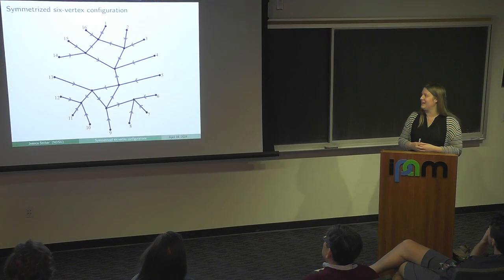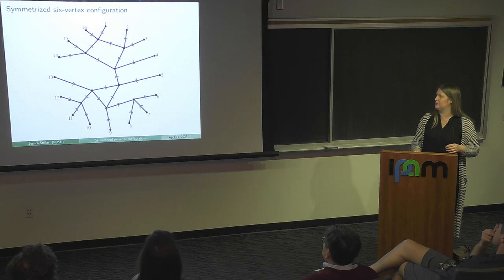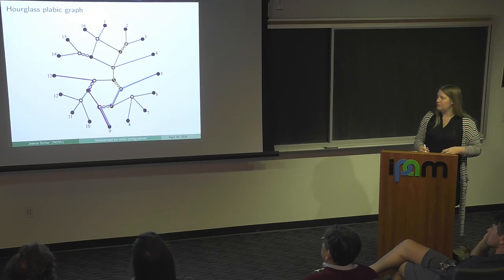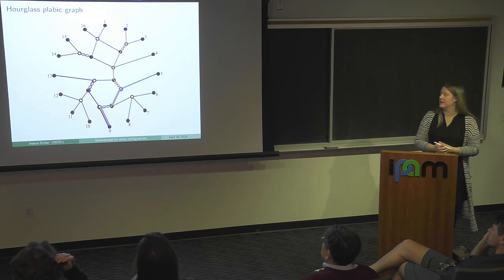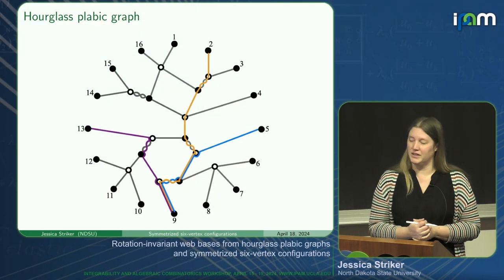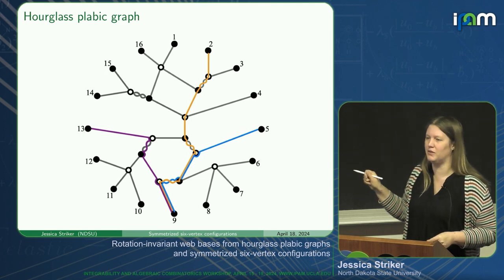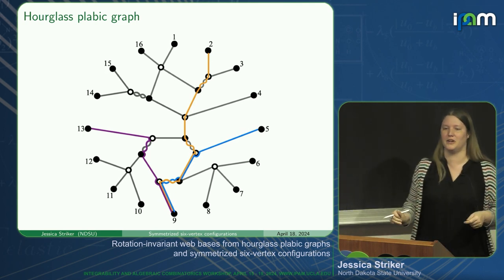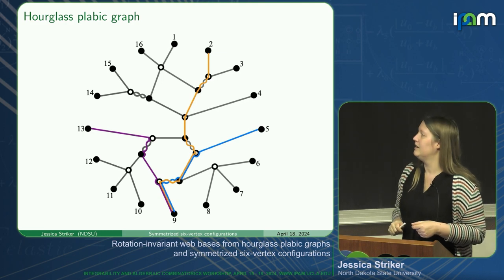What I want to show you is what we did with these and how we came across them—I'm basically telling you the story backwards. Where we began was by trying to solve an algebraic problem, which I'll describe shortly. What we were playing with was objects that look like this—this is an hourglass planar bipartite graph. Pay no attention to the colors for now; those will be meaningful later.